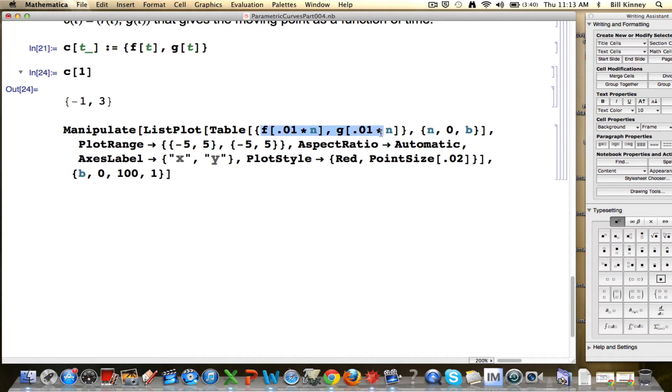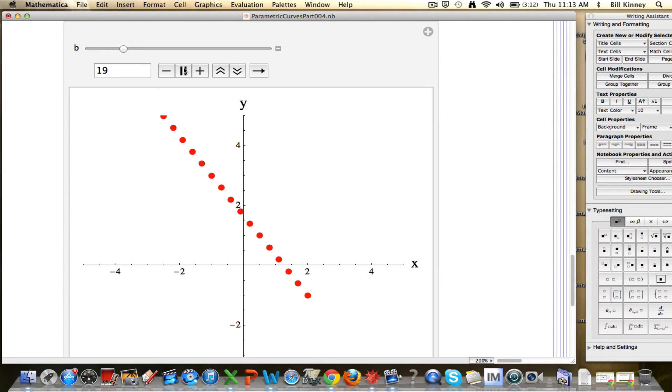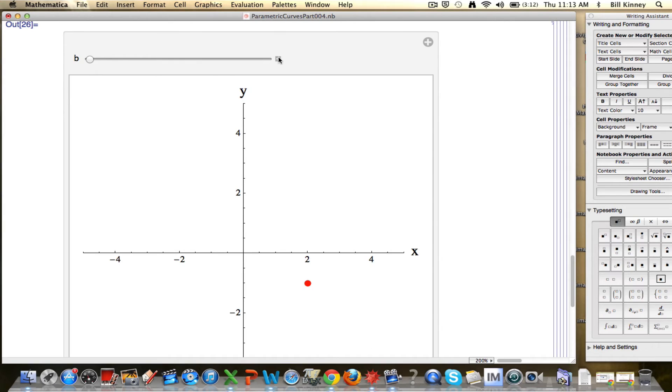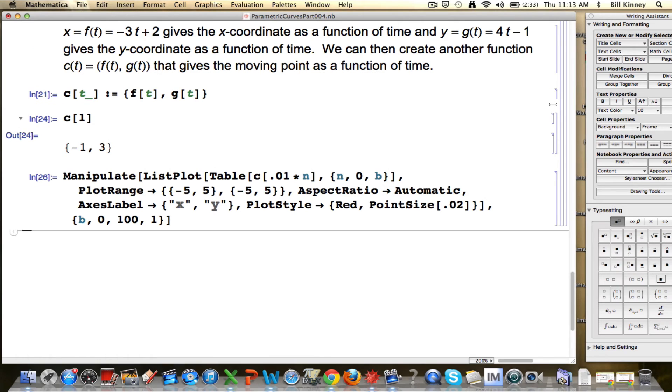And in this code right here, I can get rid of this. I can replace this all with c[0.1*n] instead. And it should still animate the motion like we see here. Whoops. I must have made a mistake. Let's see. Oh, yeah. I may be going from 0 to 100. I need a 0.01. There we go. This will work. There's the animation of the motion. Let's speed it up a bit. I can use this new function, c, that I've created to do that.